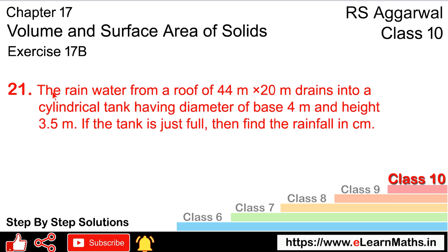Let's do question number 21 of XI 17B. Rainwater from a roof of 44 meter into 20 meter drains into a cylindrical tank whose diameter of base is 4 meter and height is 3.5 meter. If the tank is just full, then find the rainfall in centimeters.